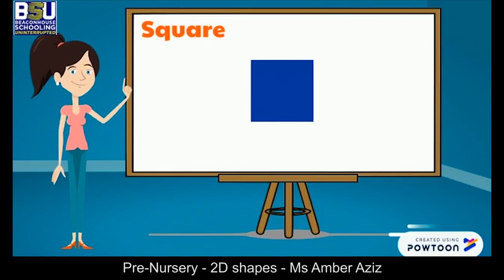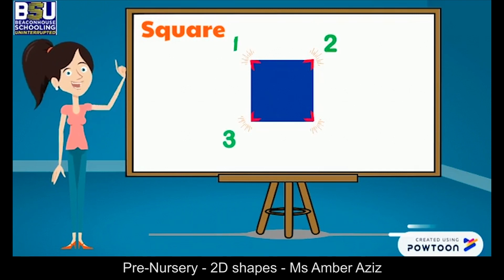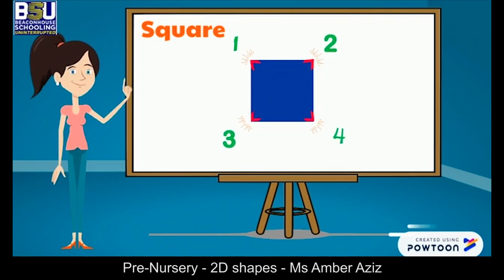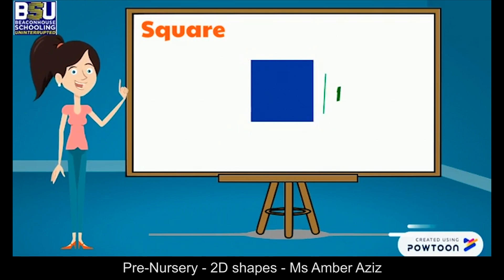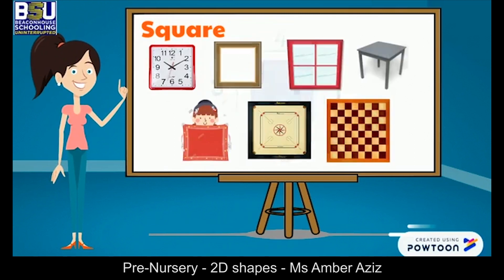This is a square. It has four equal sides and four vertices. We will count the vertices first: one, two, three, four. Now we will count the sides: one, two, three, four. Good job! Now let's look at the things that are square in shape.